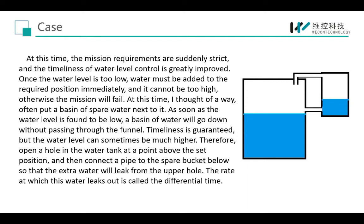At this point the mission requirements became stricter — the timeliness of water level control was greatly improved. Once the water level dropped too low, water had to be added immediately to restore it, and it couldn't go too high or the mission would fail. So I kept a basin of spare water nearby: as soon as the water level was found to be low, I poured it in directly without going through the funnel to ensure timeliness. However, the water level sometimes rose too high, so I opened a hole in the water tank above the set position and connected a pipe to a spare bucket below, so that any extra water would leak out through the upper hole. The rate at which this water leaks out is called the differential time.